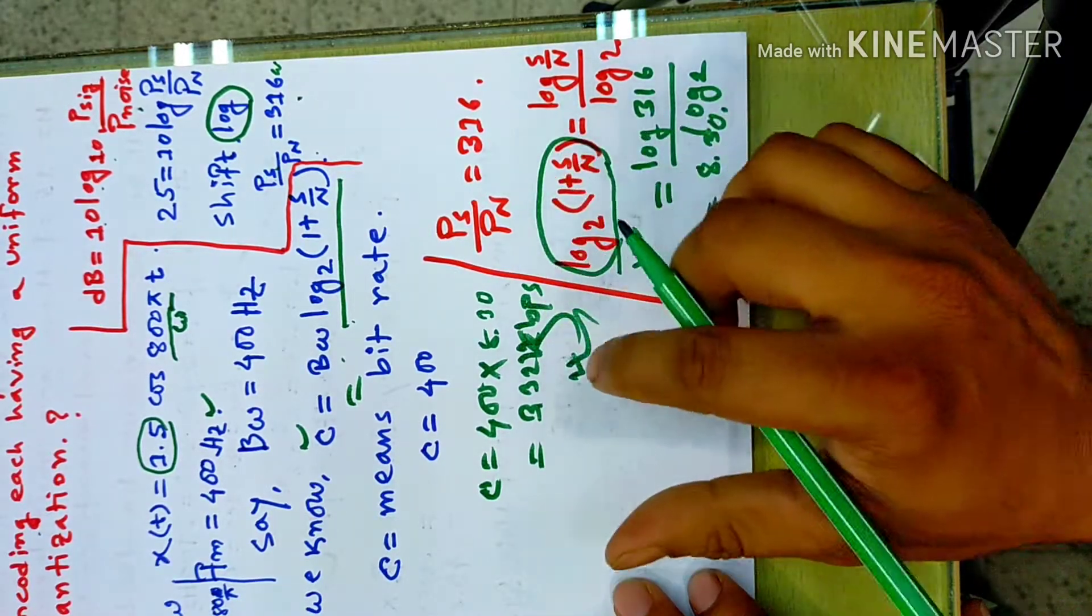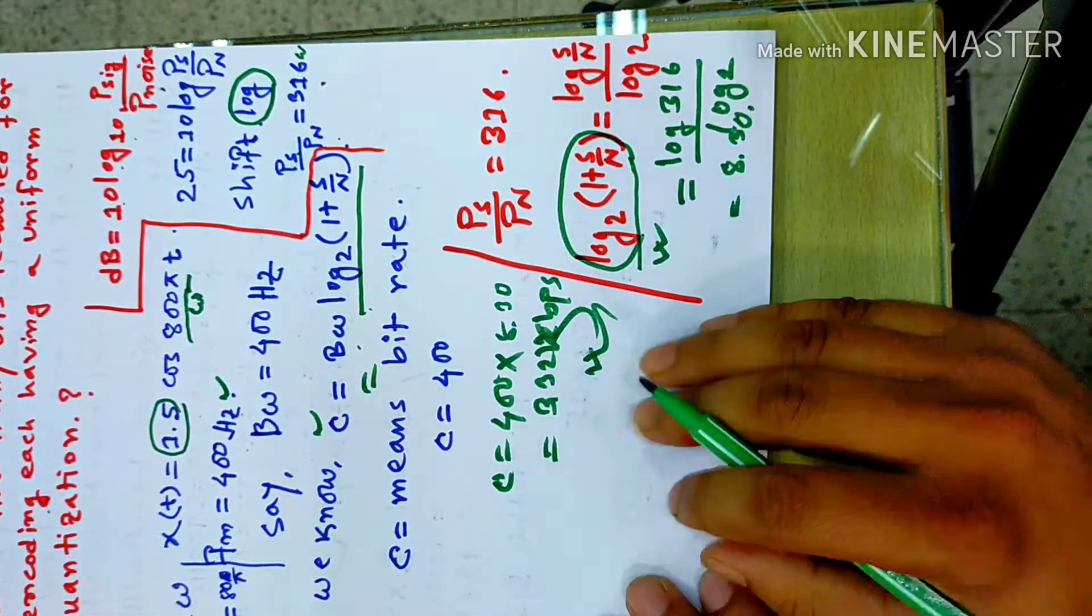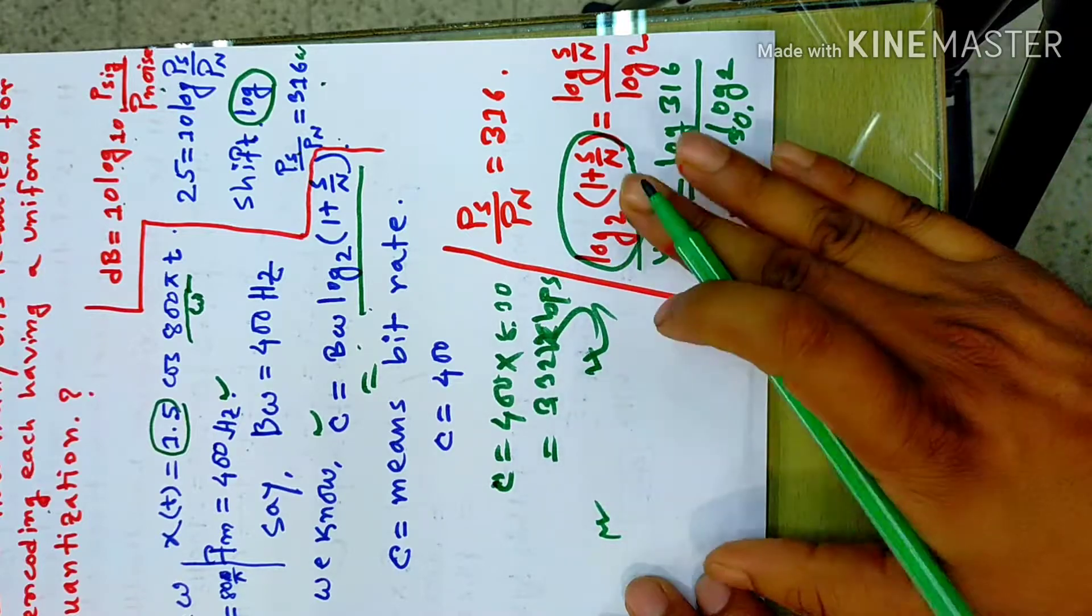We have to get the channel capacity or bit rate or how many bits required for encoding it having uniform quantization. 3.32 kbps, we have to get the value of 3.32 kbps.